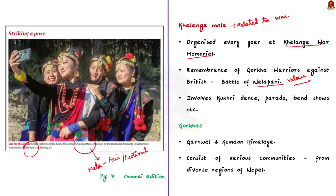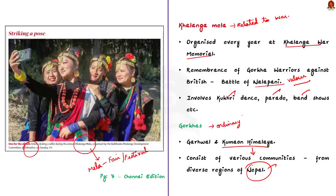The Gorkhas of Garhwal and Kumaon Himalayas consist of various communities who came from diverse regions of Nepal at various points of time but now reside as ordinary citizens of India. Historians agree that Gorkha or Gorkhali is a name that aggregates various races distributed in numerous valleys of Nepal Himalaya. That is why in the Indian context, the term Gorkha generally applies to persons of Nepali origin. The Battle of Nalapani happened in the outskirts of Dehradun in 1814, fought between the Gorkhas and the British.